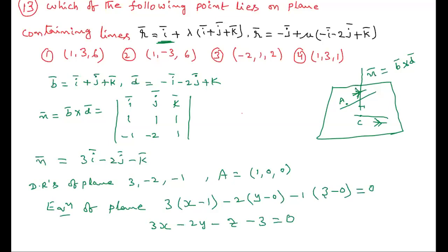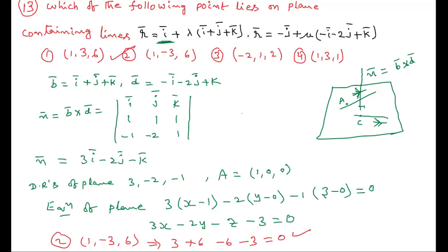The question asks which point lies on this plane. We substitute each option into 3x − 2y − z − 3 = 0. Substituting the second option (1, −3, 6): 3(1) + 6 − 6 − 3 = 0. This equals 0, so the second point lies on the plane.